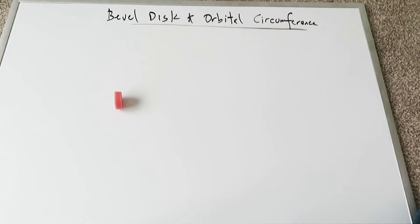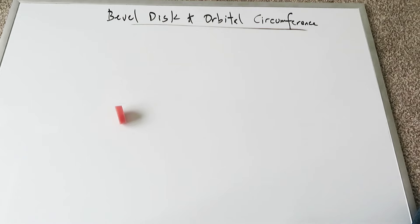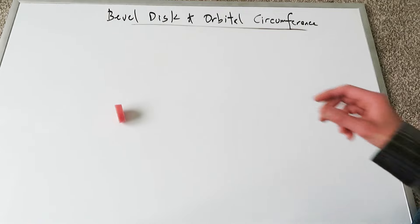And it will always want to assume that circular path because of that beveled edge. What we are interested in is calculating how that beveled angle gives rise to a circular path having a certain radius and a circumference.